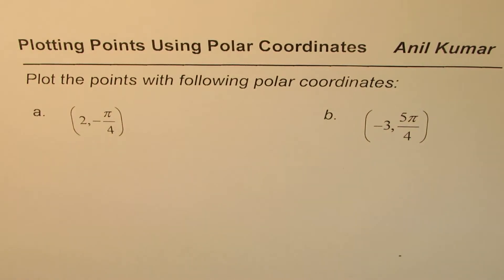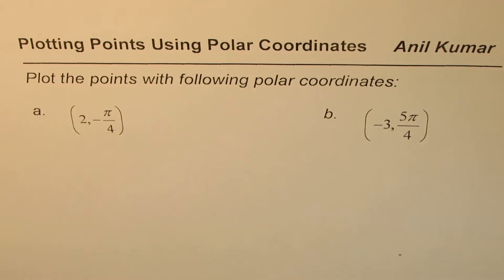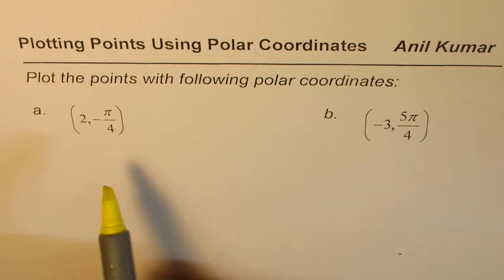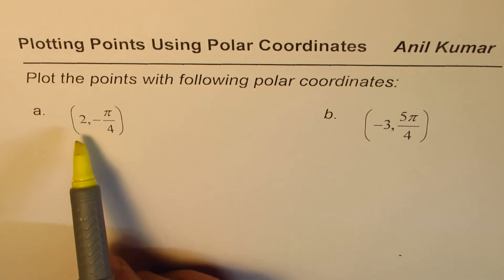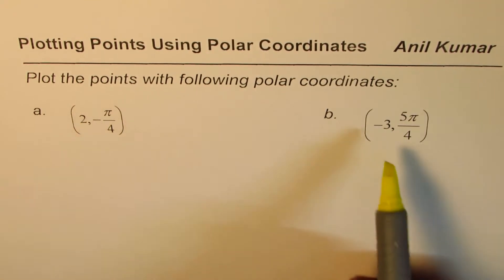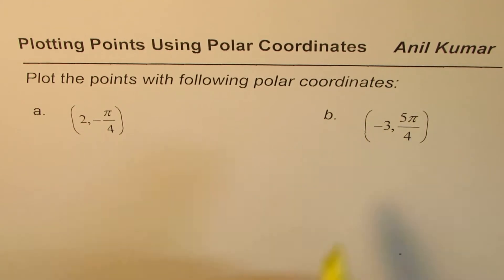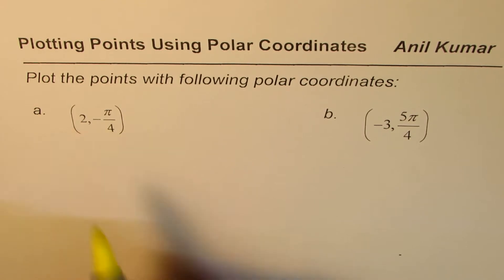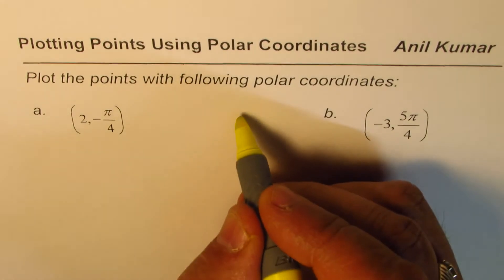I'm Anil Kumar and in this video we'll see how to plot points with polar coordinates. The question here is plot the points with following polar coordinates: a is (2, -π/4) and b is (-3, 5π/4). So in the first one we have taken theta as negative and in the second one we have taken the value of R as negative.